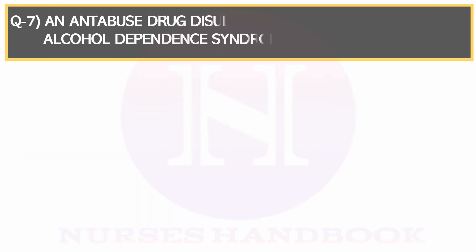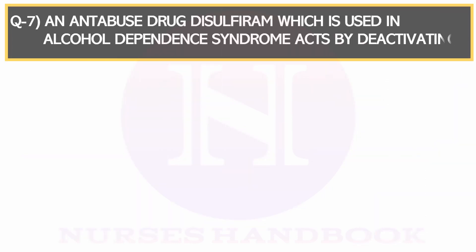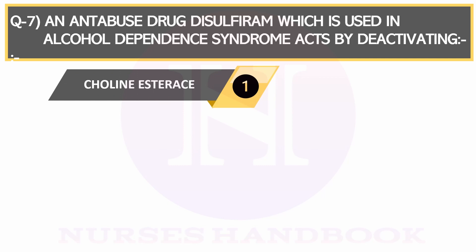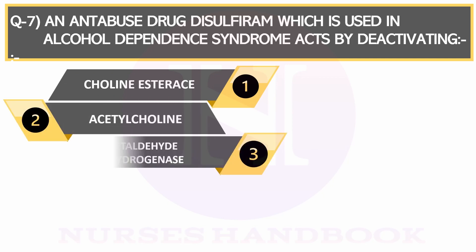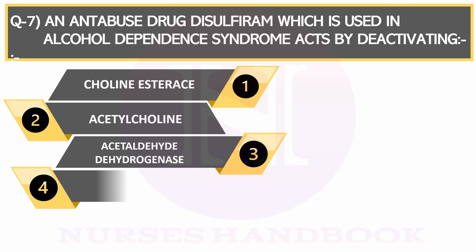Question number 7. An antipose drug, Disulfiram, which is used in alcohol-dependent syndrome, acts by deactivating Option 1: Cholinesterase, Option 2: Acetylcholine, Option 3: Acetaldehyde dehydrogenase, and Option 4: GABA.